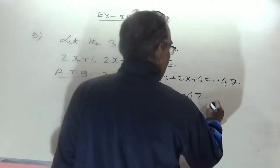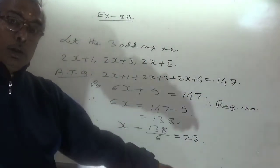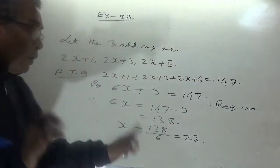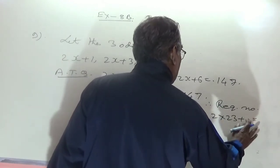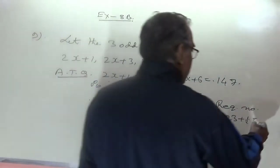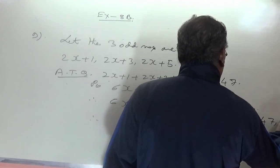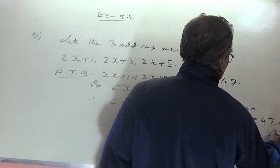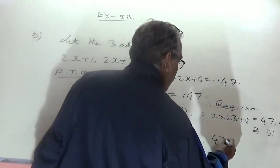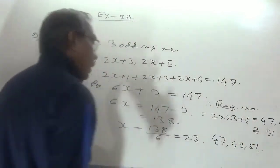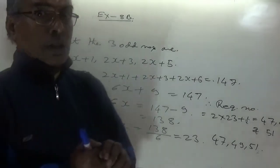The required numbers are not simply 23 — substitute back: first odd number = 2(23)+1 = 47. The three consecutive odd numbers are therefore 47, 49, and 51. You can verify: 47 + 49 + 51 = 147.